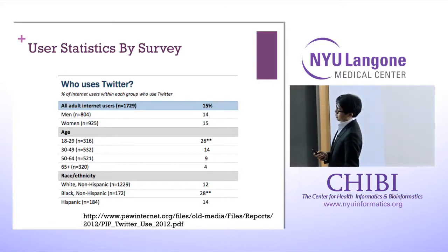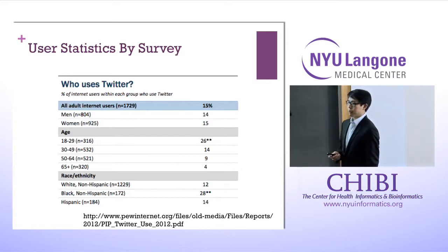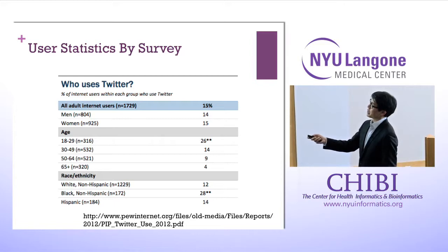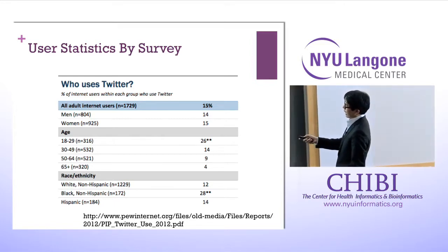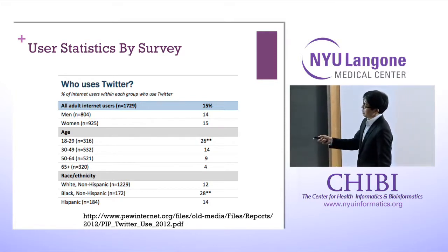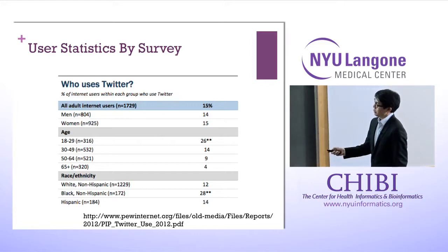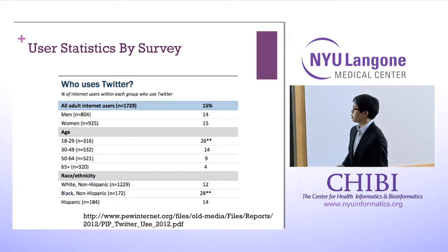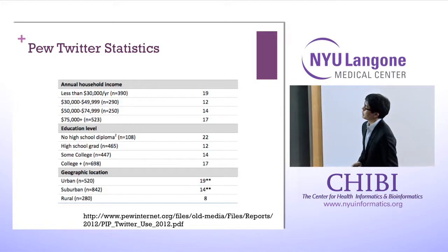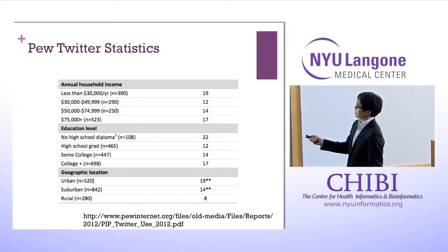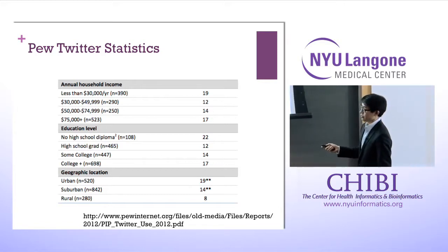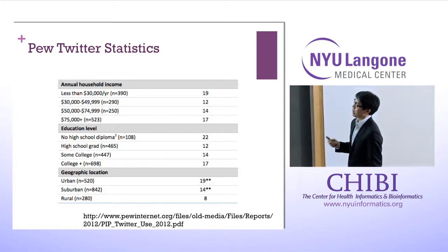A Pew Internet Association study looked at demographics of Twitter users. It's pretty evenly split between men and women. The age skews young — 18-to-29-year-olds represent 26%. The Black non-Hispanic population is quite well represented on Twitter. Household income is fairly evenly distributed. Education level is also interesting in how it's distributed. Geographically, there are more urban folks than suburban or rural. Keep these numbers in mind — they're the biases that will color any analysis we do.